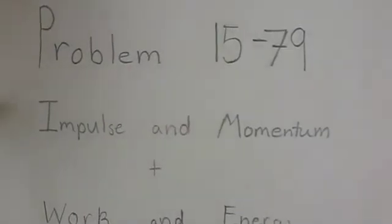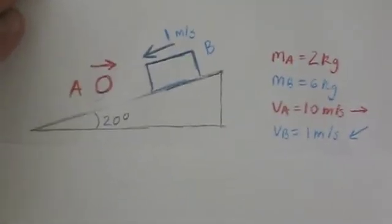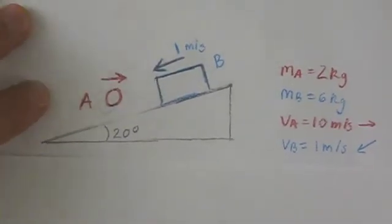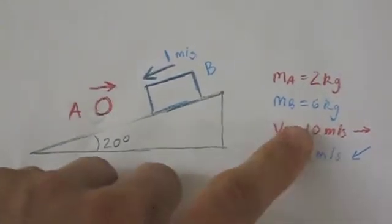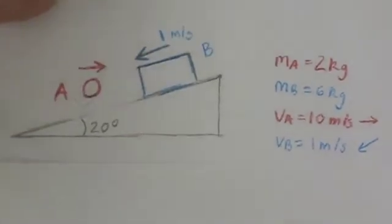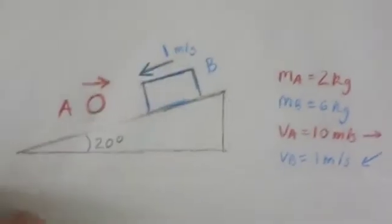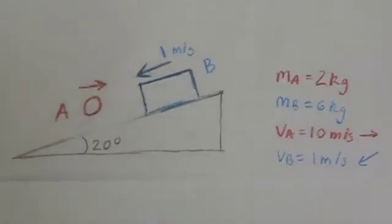For our project, we did problem 15-79, which is a two-part problem. The first part involves impulse and momentum, and the second part involves work and energy. The problem describes a ball weighing 2 kilograms traveling horizontally with a velocity of 10 meters per second, while a 6-kilogram box slid down an incline of 20 degrees with a velocity of 1 meter per second.